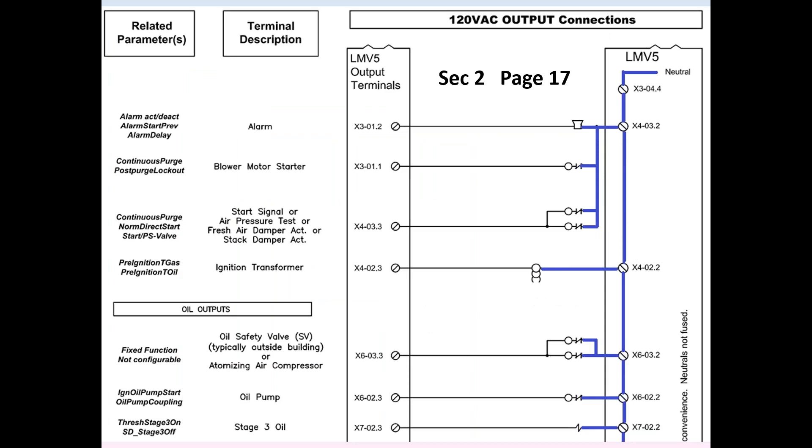This is followed by all the line voltage outputs of the LMV-5. Again, parameter, description, terminal. Notice to the right, shown in blue, all of the neutral terminals are connected to each other. The more discrete terminals you have for inputs and outputs, the more you can customize an LMV-5 for a specific application, and the better the diagnostic capability.